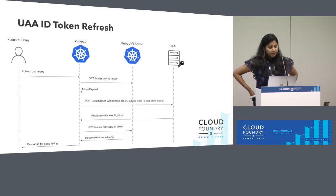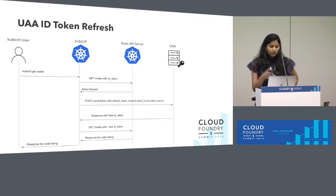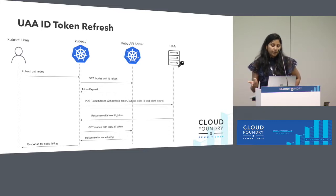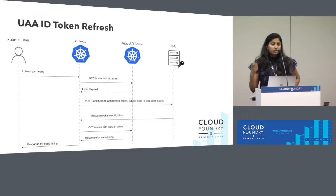The next feature is ID token refresh. UAA already supports token refresh, but previously only access tokens could be refreshed. Now we have support for ID token refresh. Take the use case of the Kubernetes command line interface and the Kubernetes API server — they are secured using UAA ID tokens, not access tokens.